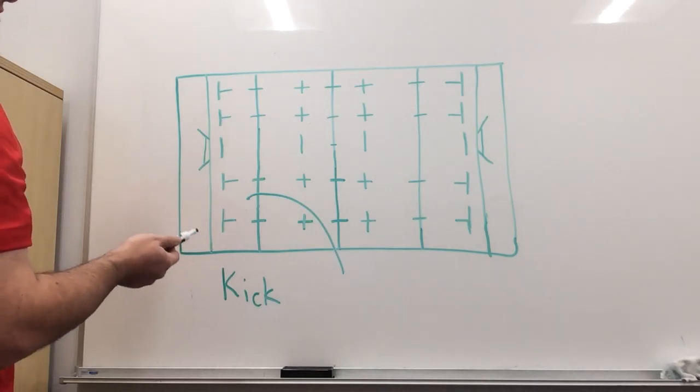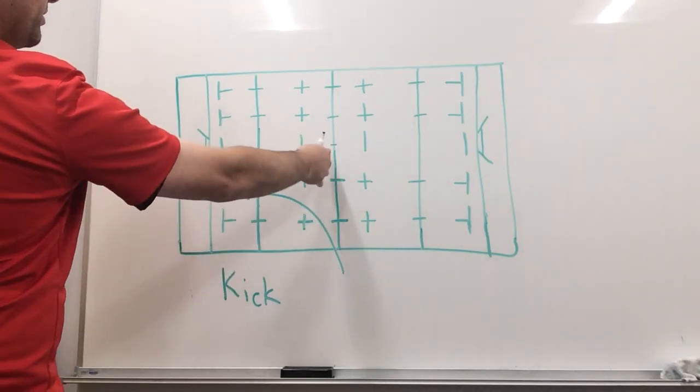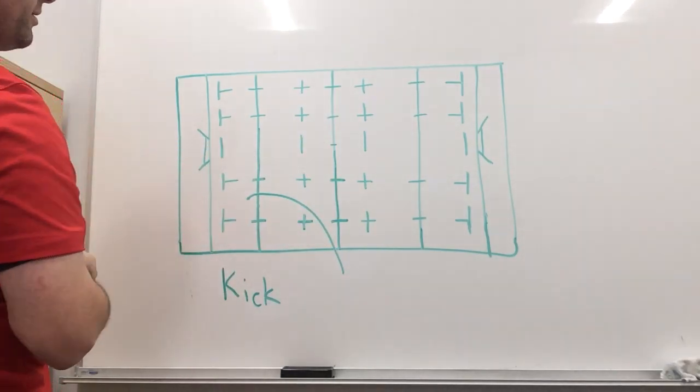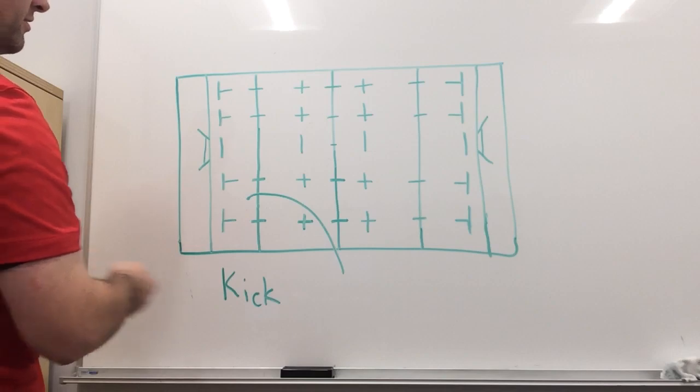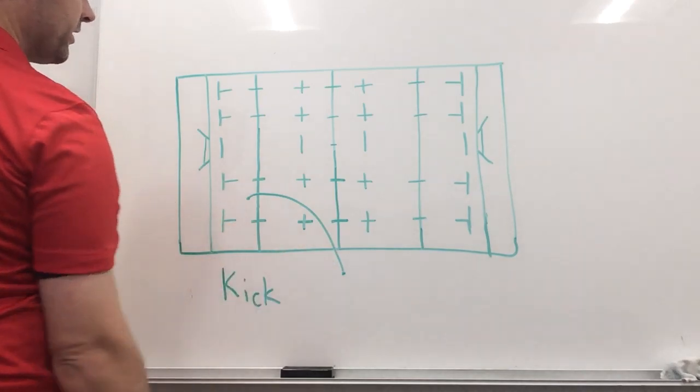Now we want to avoid a situation that the other team can counter attack. A counter attacking team inside our 50 is not a good situation. So we're going to kick this well out so that they can't do a quick line out.